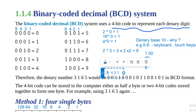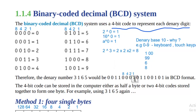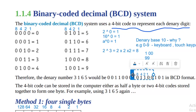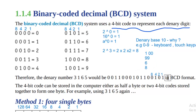Next is 1 — very simple, we just turn on the position with weight 1, giving us 0001 in four bits. To generate 6: turning on weights 4 and 2 gives 4 plus 2 equals 6. That is how you generate the binary of 6 in BCD format. To generate 5: turning on weights 4 and 1 gives 4 plus 1 equals 5.